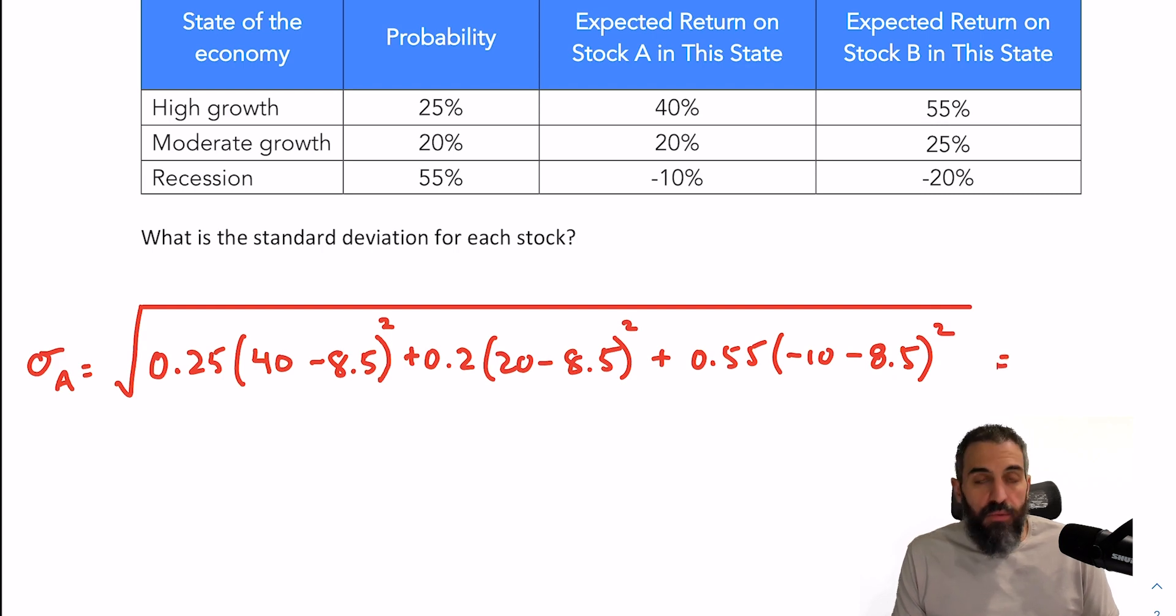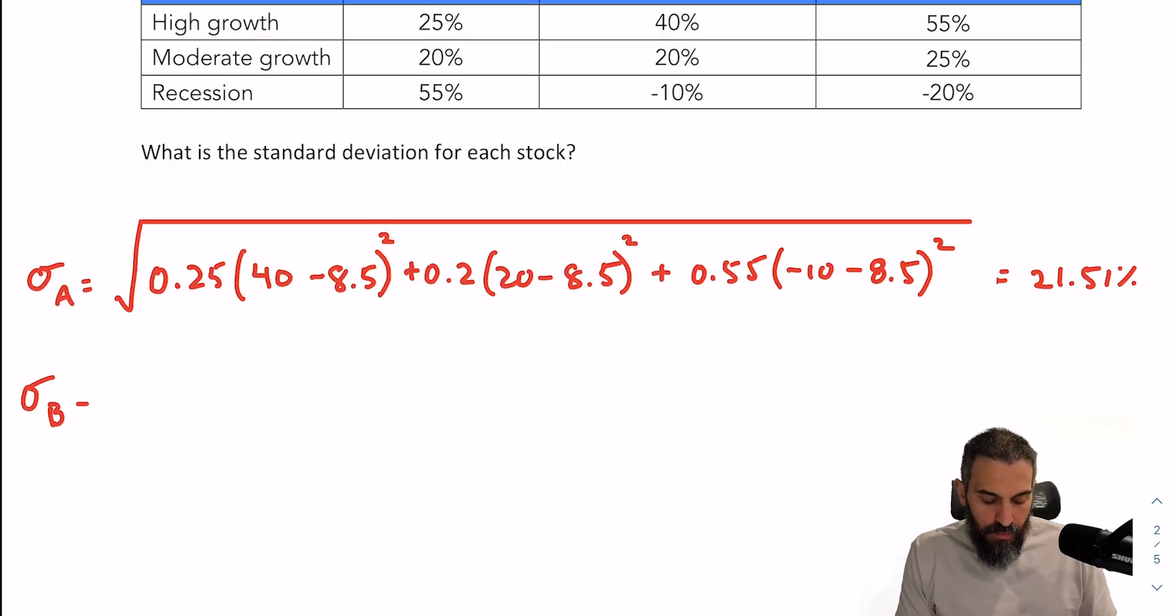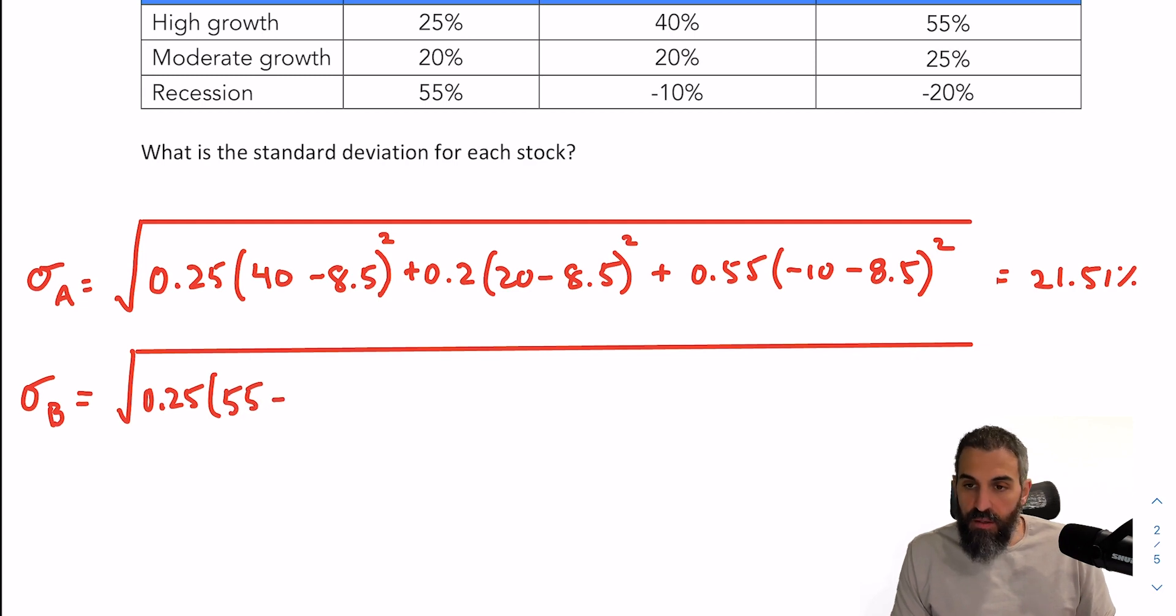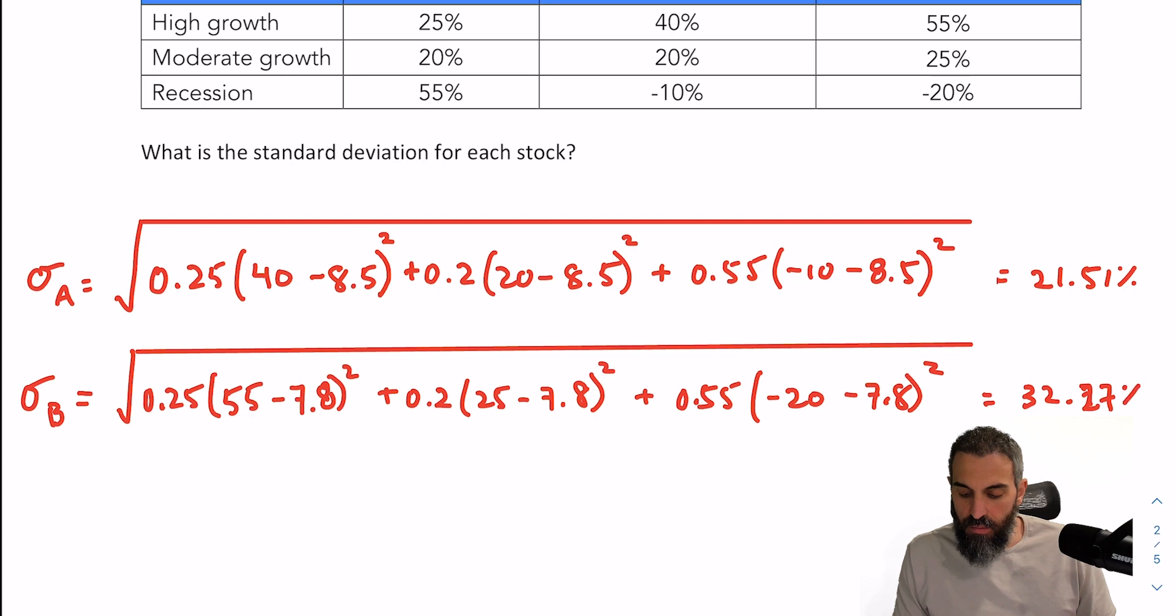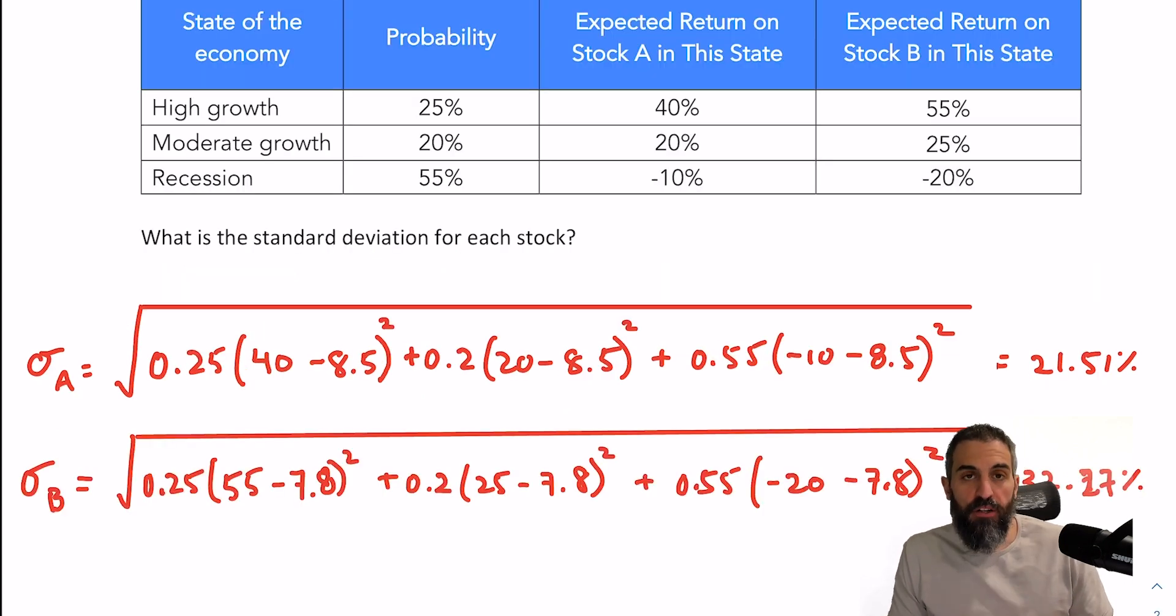And that should give you a standard deviation of about 21.51%. I'll do the exact same thing for B. So big square root, 0.25%. Now B would earn 55% in the high growth state, minus the expected return of 7.8 squared, 20% times 25 minus 7.8 squared, plus 55% times negative 20 minus 7.8 squared.